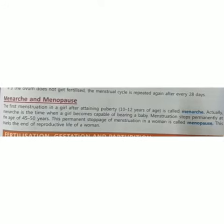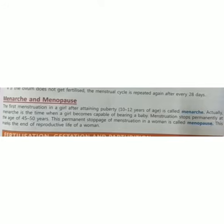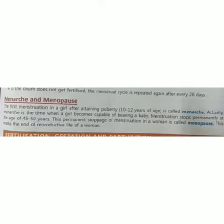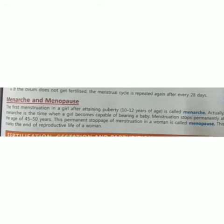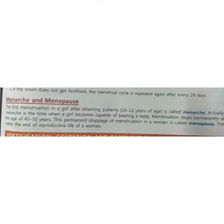The girl becomes capable of bearing a baby. But at the age of 45 to 50 years, menstruation stops permanently, and this permanent stoppage of menstruation in a woman is called menopause, which marks the end of the reproductive life of a woman.